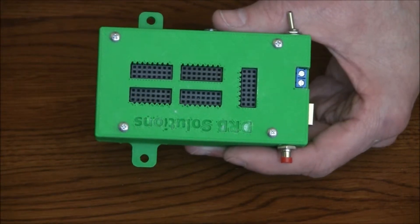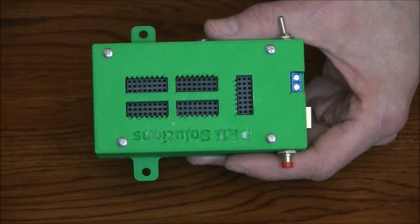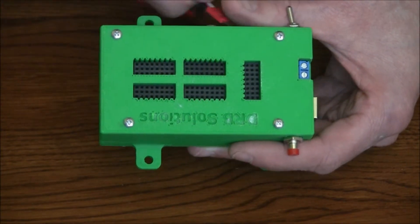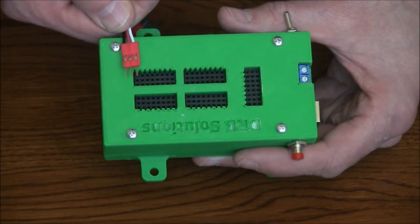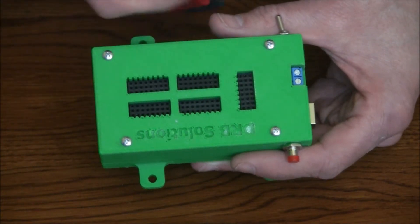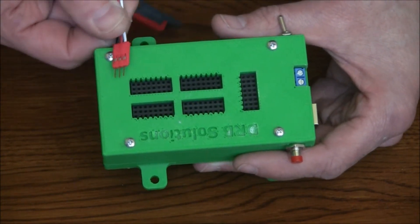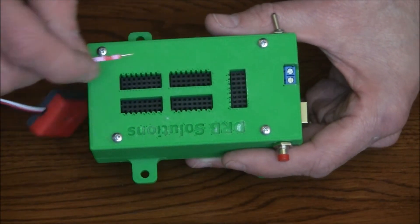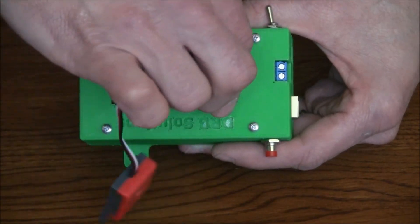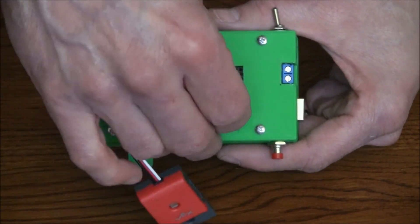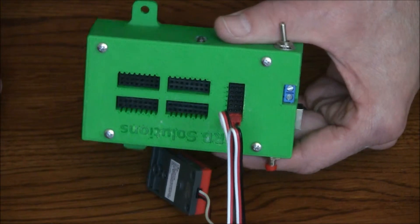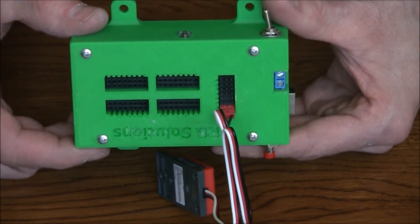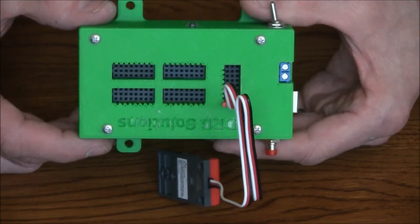And what I mean by that is the VEX connector has a polarizing fin or tab on the side. I'm not sure how well you're going to be able to see that, but on this side here there's a little fin or tab to make sure that those go in the correct way. So mine will accept those. I can go ahead and plug that in and it'll accept that VEX cable connector as well as the standard ones.